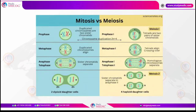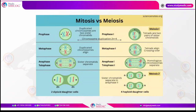Comparing mitosis versus meiosis: in prophase 1 of meiosis, homologous chromosomes align together and crossing over occurs. During anaphase and telophase of mitosis, sister chromatids separate. In meiosis, the homologous chromosomes separate — one chromosome of each pair goes to each cell. Finally, mitosis ends with two diploid daughter cells, whereas meiosis ends with four haploid daughter cells.